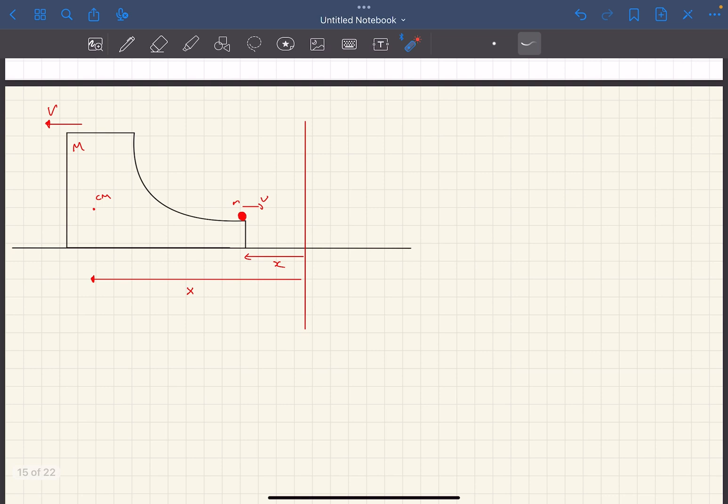Now, if we just look at the x direction, if we take small m and capital M as our system, there is no external force acting in the x direction. So we can say that sigma fx is 0, which basically means that the acceleration of the center of mass in the x direction is simply 0.